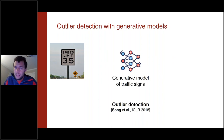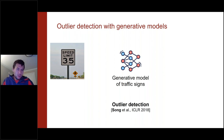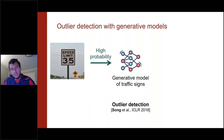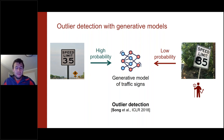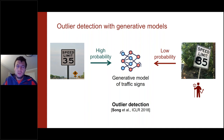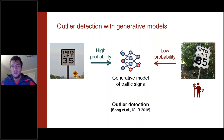Another application is outlier detection. If the model knows how to generate realistic images, it also knows which images are realistic and which are not. You can use this to detect, for example, whether a speed limit sign looks real or has been tampered with — giving it low probability. This lets you identify adversarial examples or outliers, something you can't do with a traditional discriminative model.